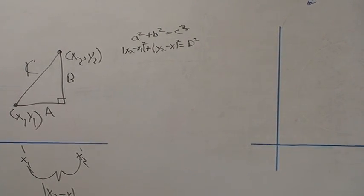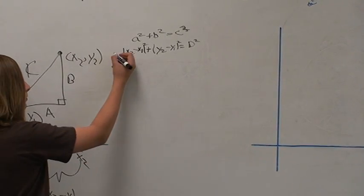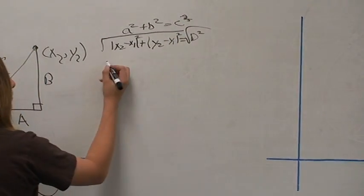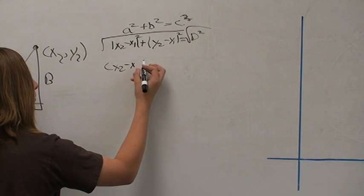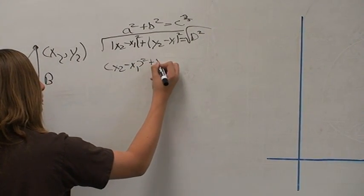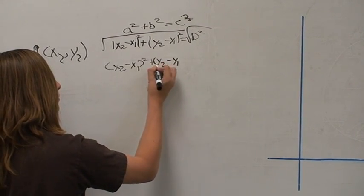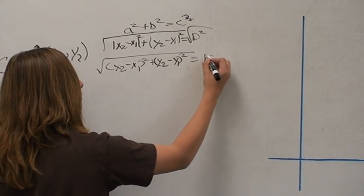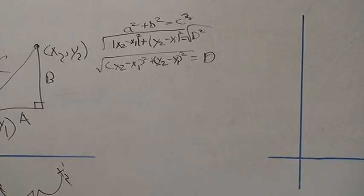Since we have absolute value, we no longer need the absolute values since they're squared. So we'll rewrite the equation and take the square root of both sides. Solving for D, we take the square root of both sides. And there is our distance formula proof.